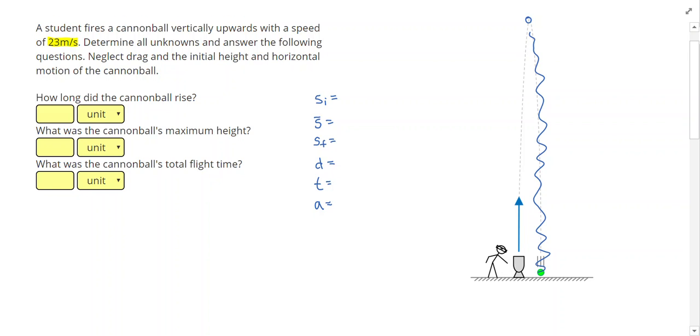Now it's time to start looking for three givens. So the first given is in the problem, the cannonball was fired with a speed of 23 meters per second. That's at the very start of my problem, so that's my initial speed of 23 meters per second. By eliminating the second half of the problem, I know that when the ball reaches maximum height, the ball's final speed is going to be zero.